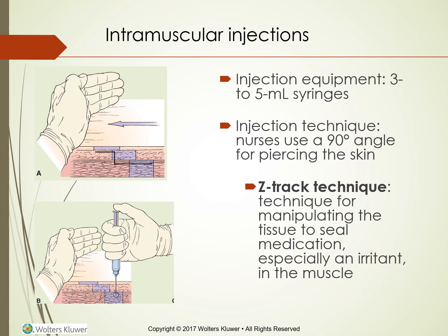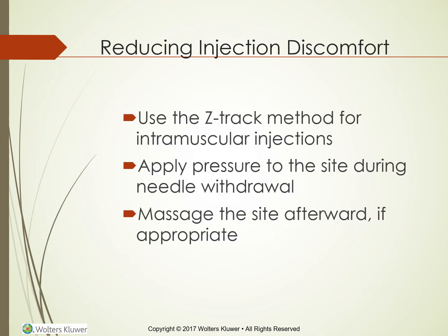The intramuscular injection technique uses a 90 degree angle for piercing the skin. An important technique is the Z-track method, used for manipulating tissue to seal medication — especially irritating medication — inside the muscle. Use the Z-track method for intramuscular injections.